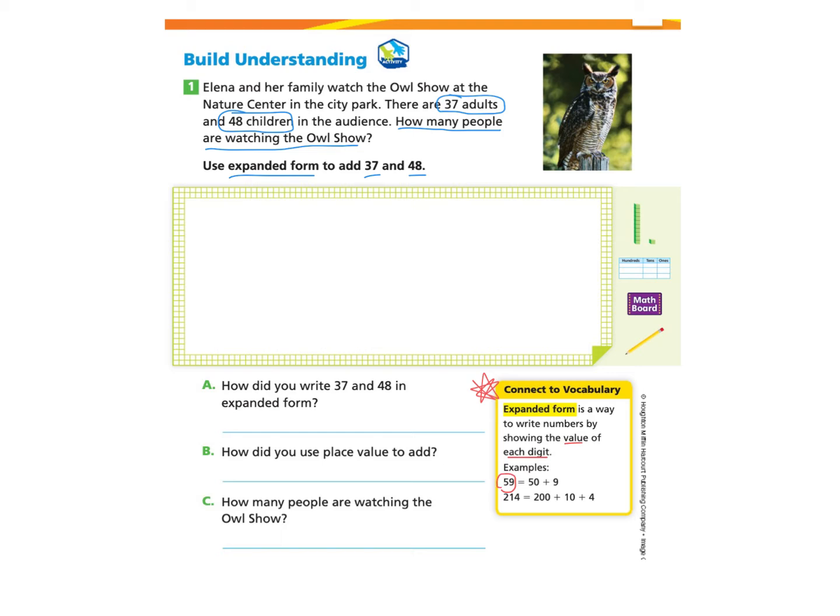They take 59 and they know that the 5 represents 5 tens, which is 50, and the 9 represents 9 ones, which is 9. So 59 expanded is 50 plus 9.